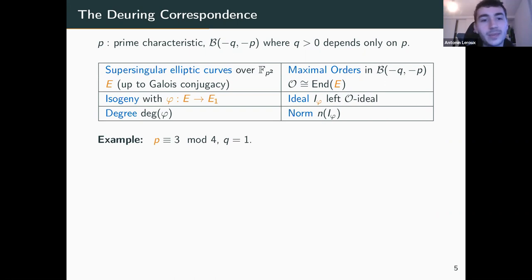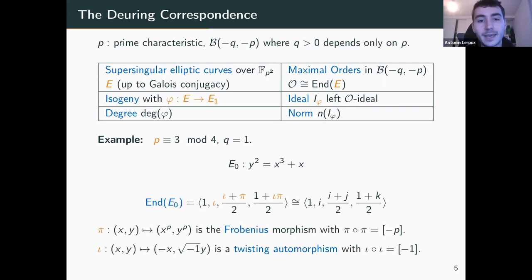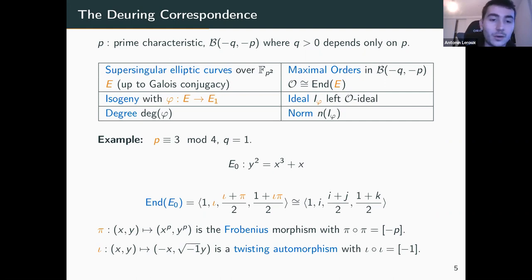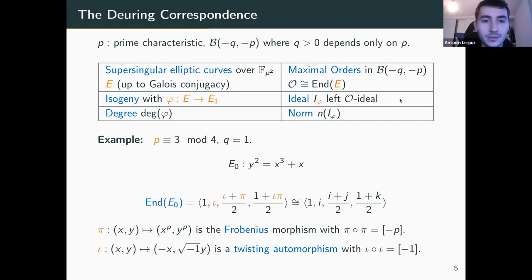A quick example: when I take p equal to 3 mod 4, then I can have q equal to 1. The curve y²=x³-x is supersingular. Here is a very nice basis of its endomorphism ring generated by two endomorphisms, π and ι, whose expressions you can see are very simple as rational maps. And then you have the correspondence with the elements over the quaternion algebra.